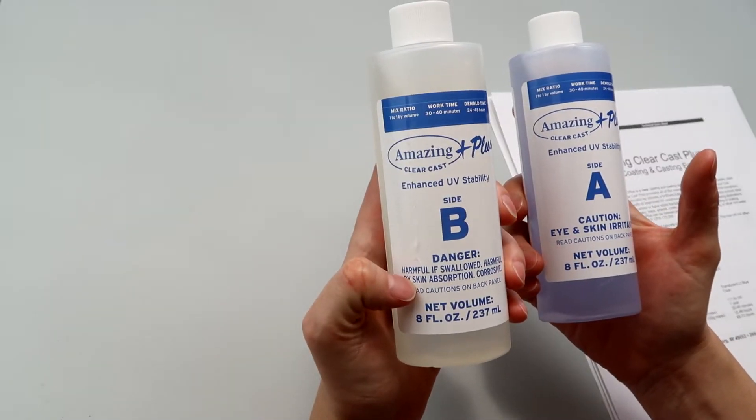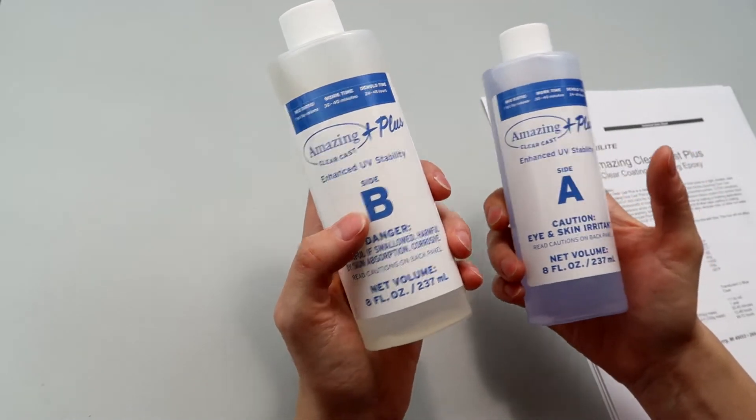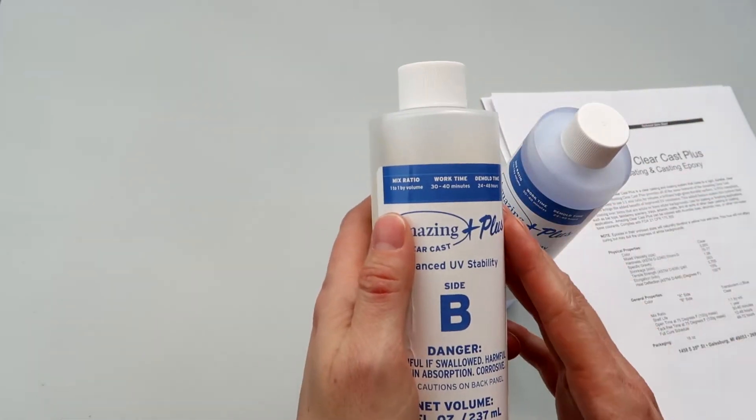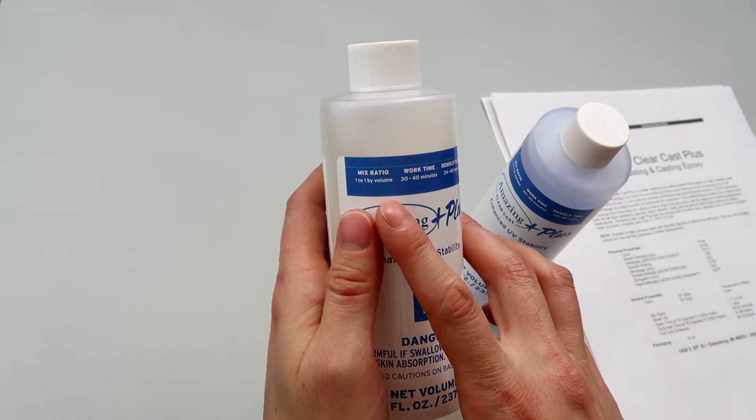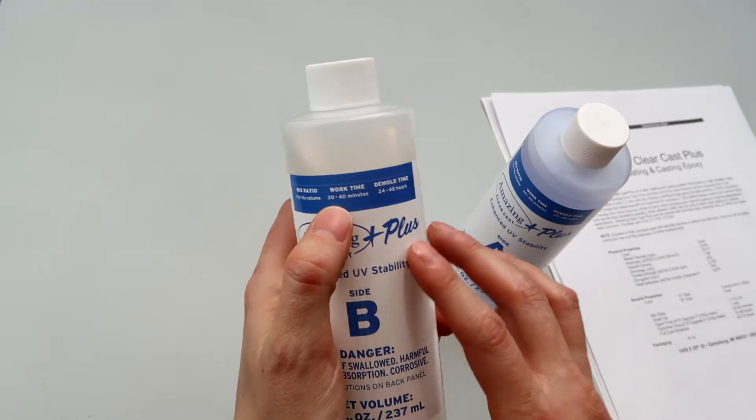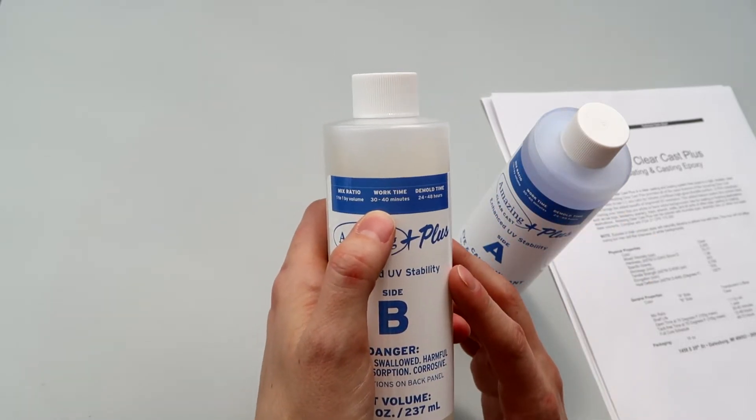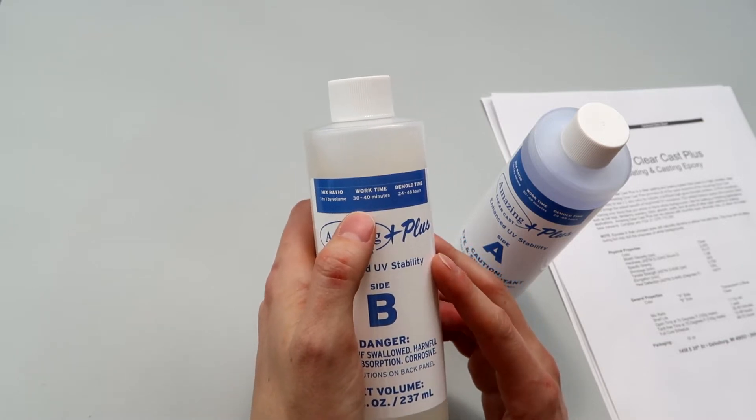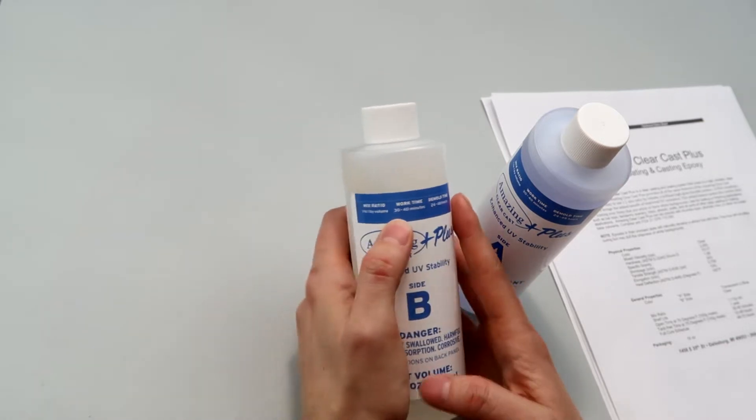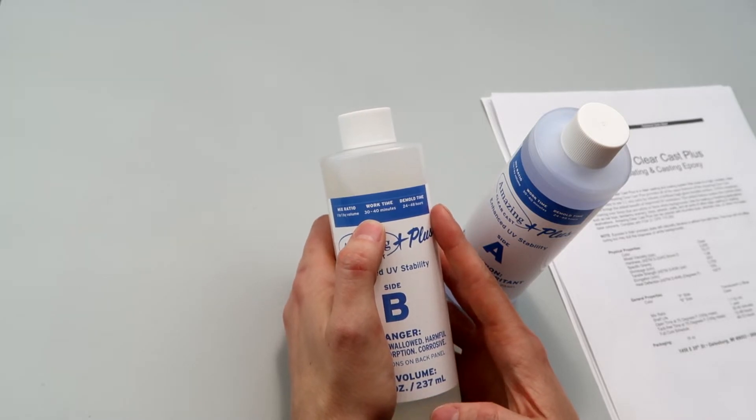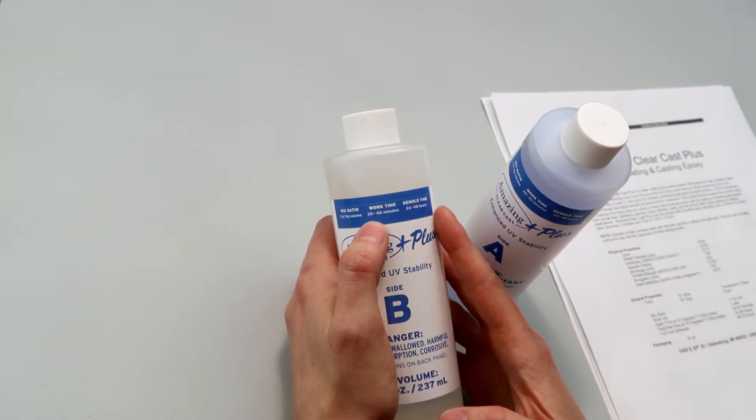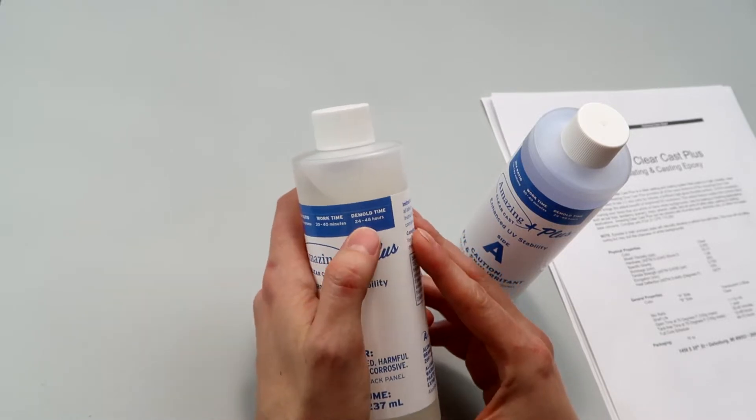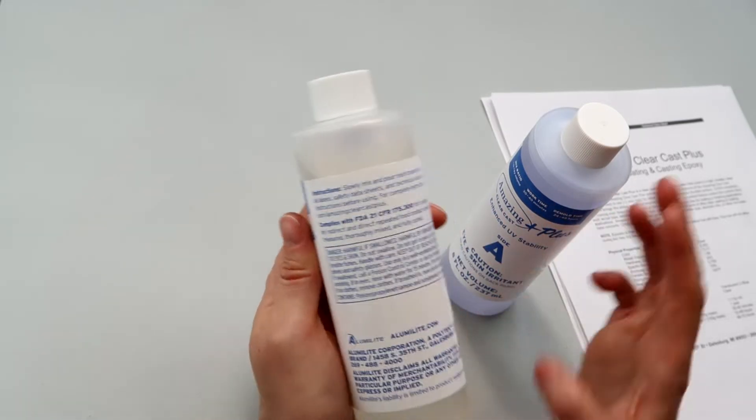It is a 16 ounce kit. There's 8 ounces of the hardener and 8 ounces of the resin. It is a 1 to 1 mix ratio. All of that is stated at the top: 1 to 1 by volume, work time 30 to 40 minutes. I'll see what's up with that because the regular Amazing Clearcast says the same thing but I don't think I get 30 minutes out of it. I think I probably get like 20 max. It thickens up quick because it cures quickly. Demold time 24 to 48 hours, so we'll check all that out.